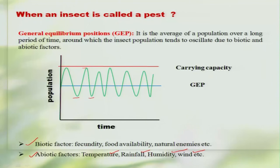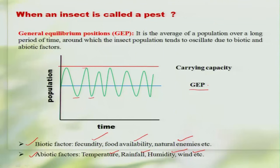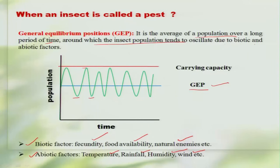At the same time, biotic factors such as the fecundity rate of the insect population, the availability of food in a habitat, and natural enemies will also contribute to this kind of fluctuation. This fluctuation will be hovering around one position which we call the general equilibrium position — the average population over a longer period of time around which an insect population tends to oscillate due to biotic and abiotic factors.